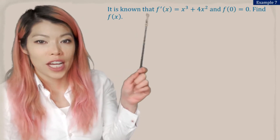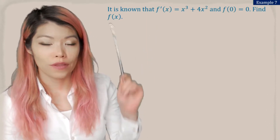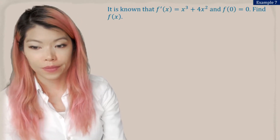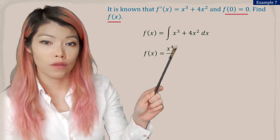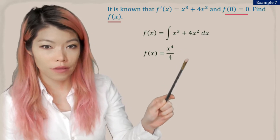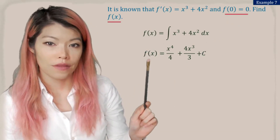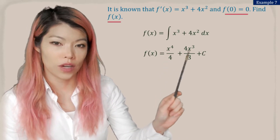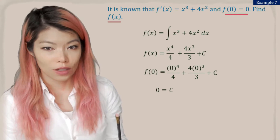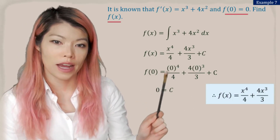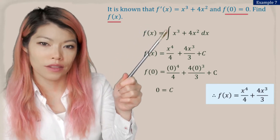Example 7: it is known that f'(x) equals x cubed plus 4x squared and f(0) equals 0. Find f(x). We have the derivative — to find the original function we anti-derive it. So x to the 3 becomes x to the 4 divided by 4, and x squared becomes x to the power of 3 divided by 3. Don't lose the 4, and don't forget your plus c. Now, f(0) equals 0 means when x is 0, f(x) is 0 — so we substitute and see that c is also equal to 0. So we can write out the final answer without the c.